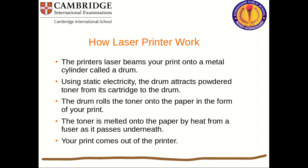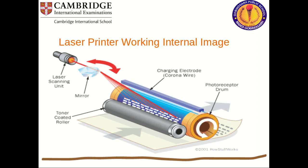How does a laser printer work? A laser beam is printed onto a metal cylinder called a drum using static electricity. The drum attracts powdered toner from a cartridge. The drum rolls the toner onto the paper in the form of your print. The toner is then melted onto the paper by heat from the fuser as it passes underneath, and your print comes out of the printer.